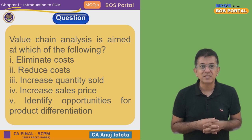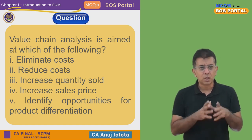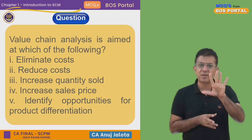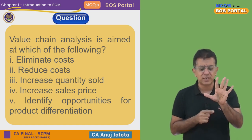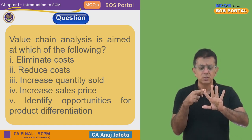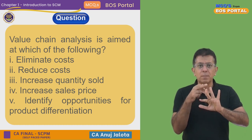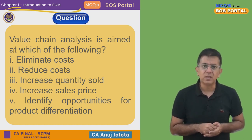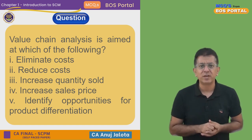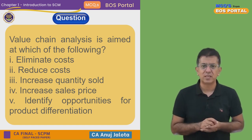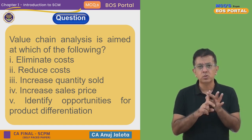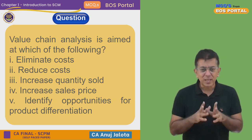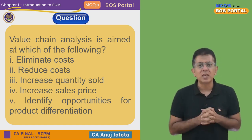Michael Porter divided all company activities into primary activities and secondary activities. In primary activities, he had five classifications: inbound logistics, operations, outbound logistics, marketing and sales, and after-sales service. In secondary or support activities, he had four classifications: human resources, procurement, technology, and firm infrastructure. But his primary aim was always to help a company identify which activities it should do and which it should not.